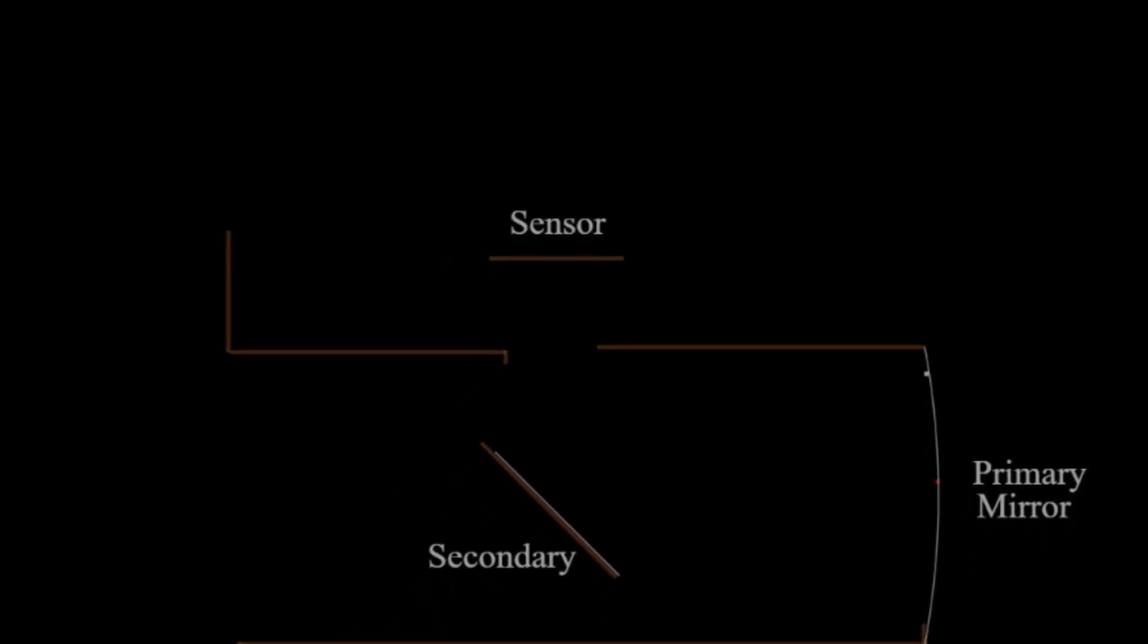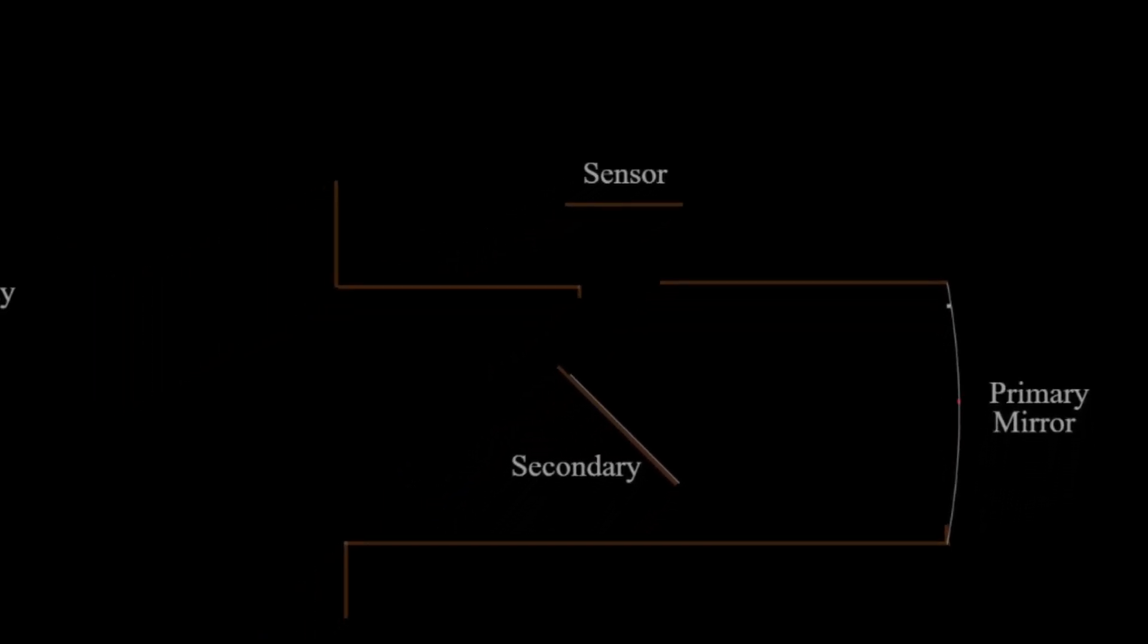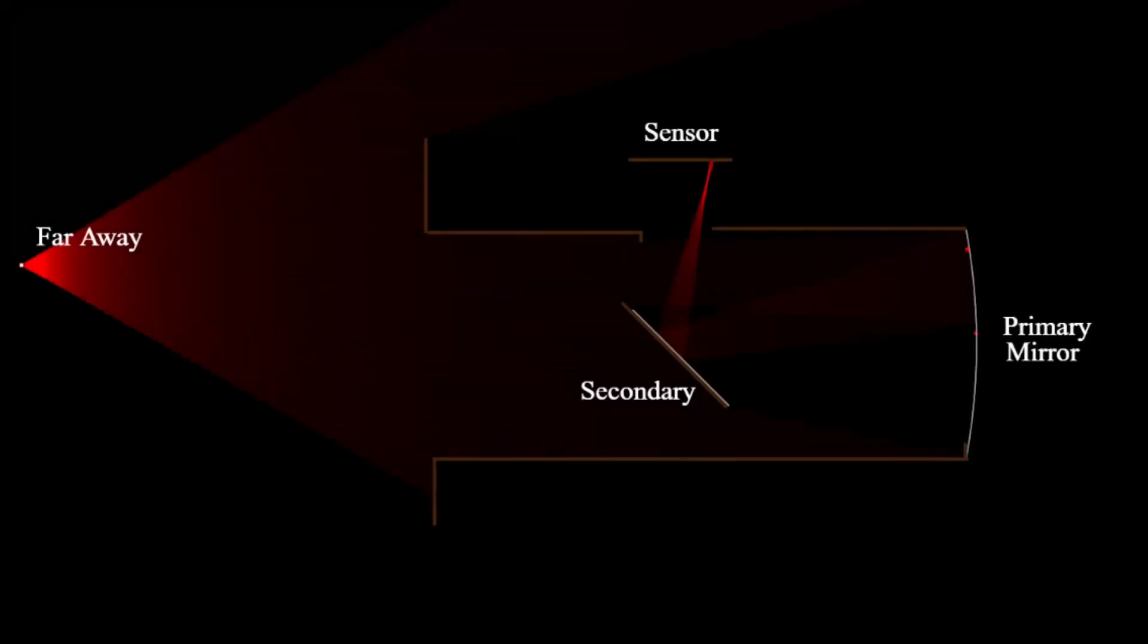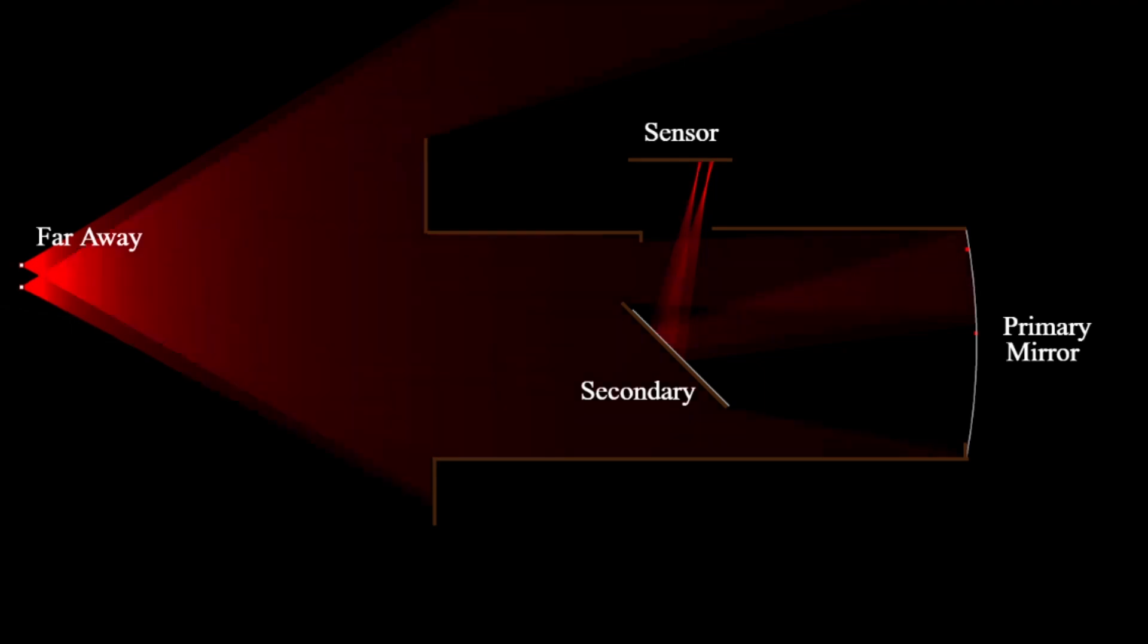Let's say that we're taking an image of the Horsehead Nebula. This red light represents the top of the Horsehead, and the bottom light shows the bottom of the Horsehead. As you can see, light from the top and bottom hit different parts of the sensor. We can resolve some detail from the Horsehead because the pixels are gathering light from that area of the sky and recording it.